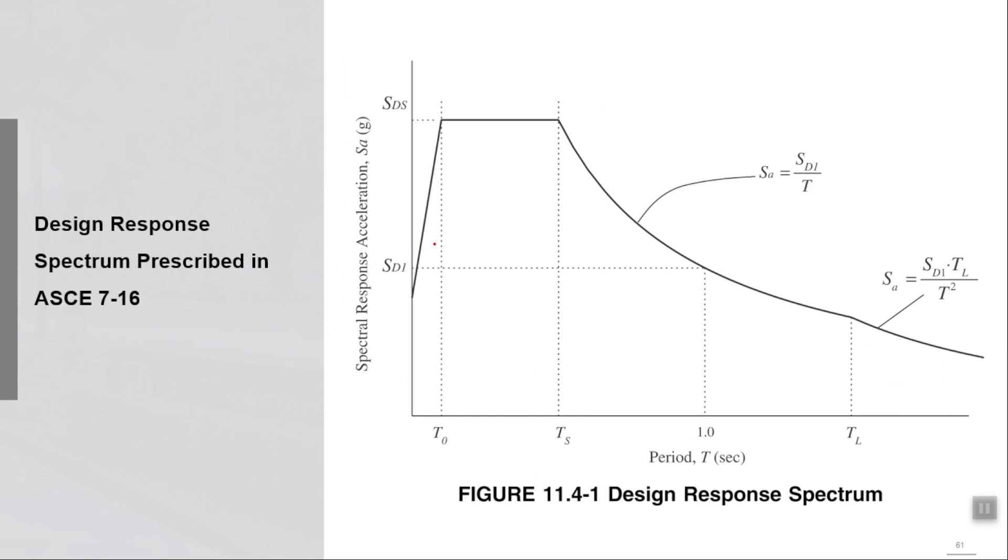The third step is the determination of response spectrum curve. This is a standard design response spectrum prescribed in ASCE 7-16 and also used in IBC 2021 and BCP 2021. This is our response spectrum. We need to construct it for our site if we want to perform RSA and also time history analysis.